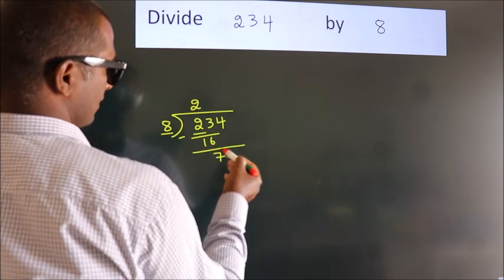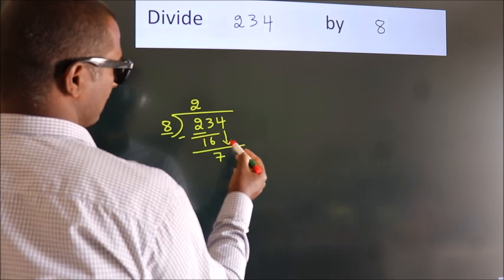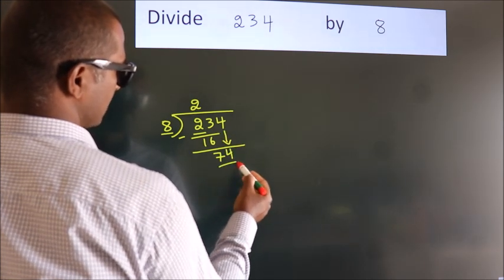After this, bring down the beside number. So, 4 down. So, 74.